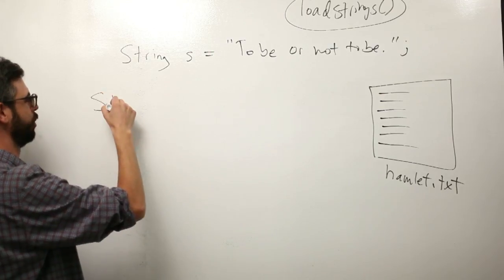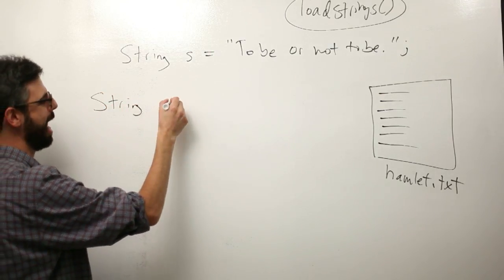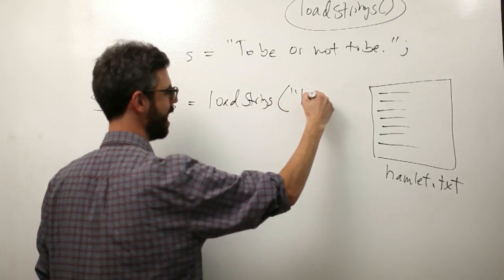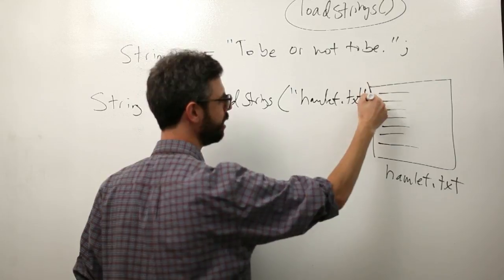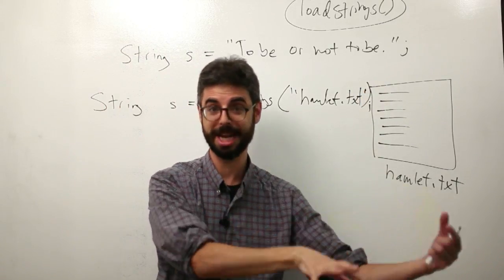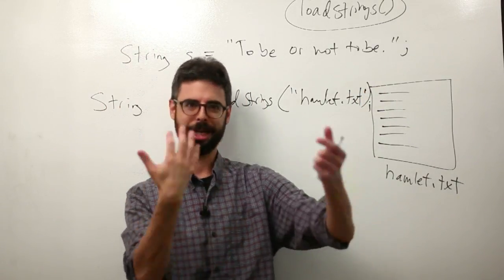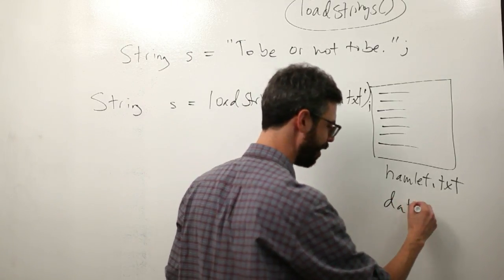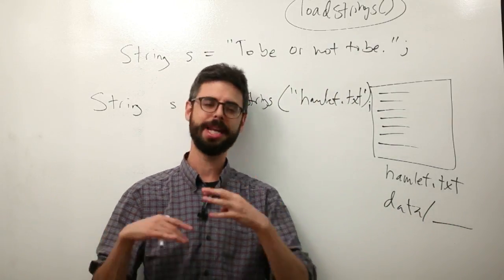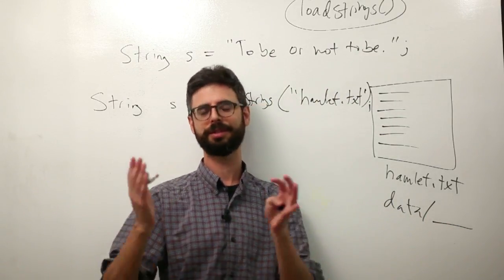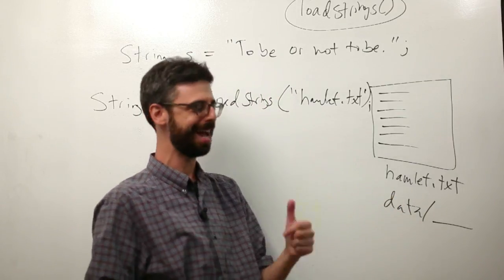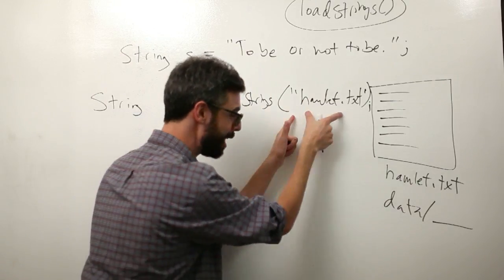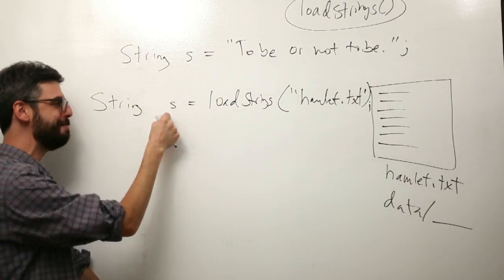Why can I say String s equals loadStrings then the file name hamlet.txt. This is just like what we did with images. I have a JPEG in my data folder, I'm going to load the JPEG in as a PImage and draw it to the screen. Now I have a text file in my data folder. The data folder of the sketch is where any sort of media assets can go: images, fonts, data files. It's called data after all.